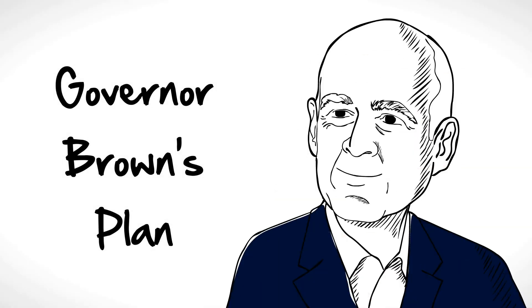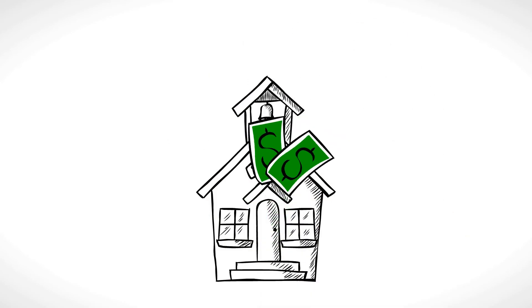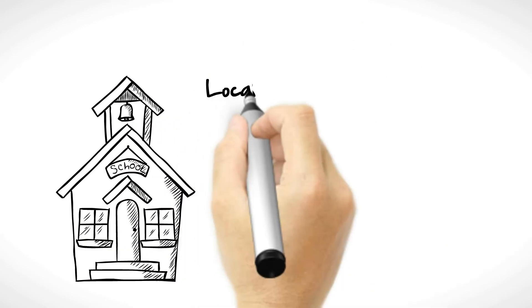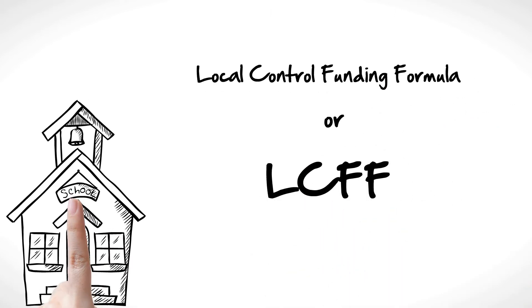The governor has a plan to fix these funding problems. He wants to improve the way we fund schools. The plan is called Local Control Funding Formula, or LCFF. The plan does the following.